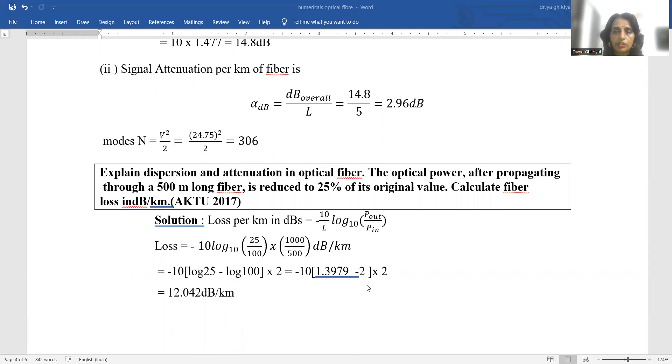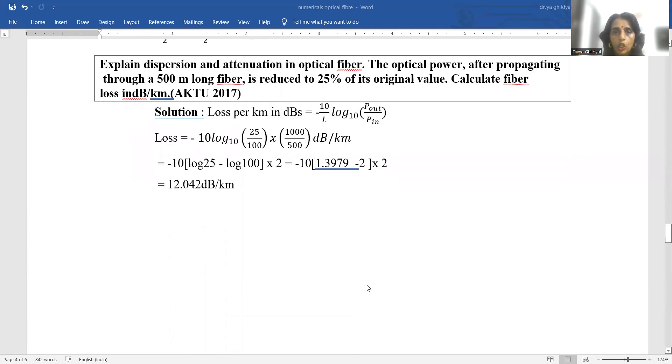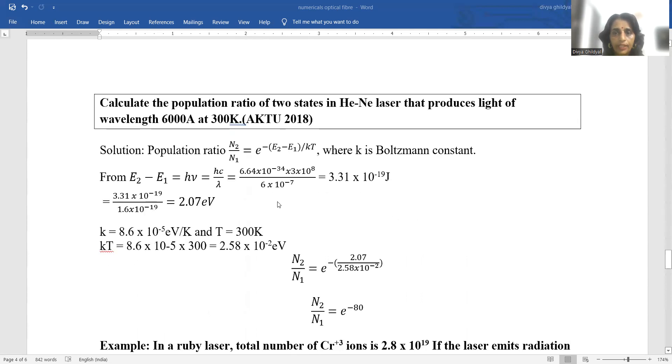Explain dispersion and attenuation in optical fiber. The optical power after propagating through a 500 meter long fiber is reduced to 25% of its original value. Find the fiber loss in decibels per kilometer. Loss per kilometer in decibel equals 10 upon L log base 10 power output upon power input. We put the mathematical values given to us in the numerical: 25% into 1000 upon 500 and we get the answer. Laser.